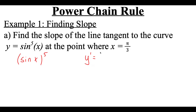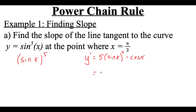The power chain rule says: drop the power down, leave the stuff on the inside the same, and then subtract 1 from the power — that's the first part. But then we're supposed to multiply by the derivative of the stuff on the inside. We've got sine of x on the inside, so the derivative of that is cosine of x. We would write this as 5 sine to the fourth of x times cosine of x.